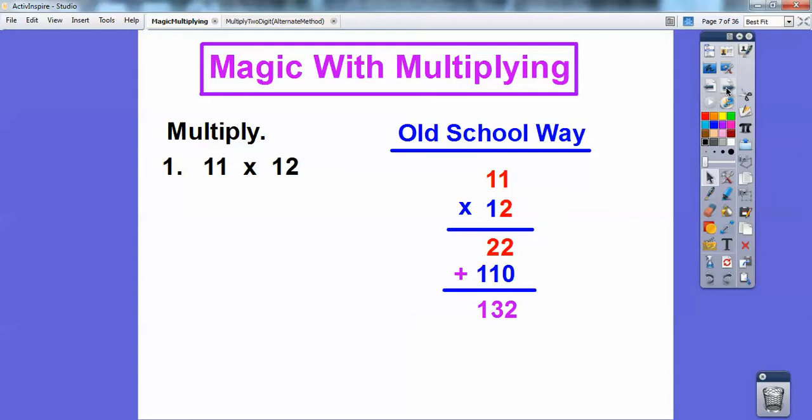This method goes pretty fast, and you can do this in your head without having to do this. Here's how it goes. This is the new way. What we do is add this units digit to this two-digit number. So 11 + 2 is 13. That's what the first two numbers are, and there's the first two numbers right there, 132. Where do I get the 2 from? I get the 2 from multiplying the units digits. If I multiply 1 × 2, that's what slides right in there.